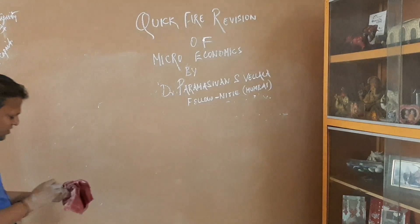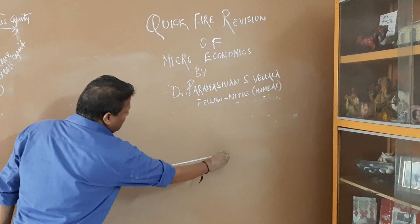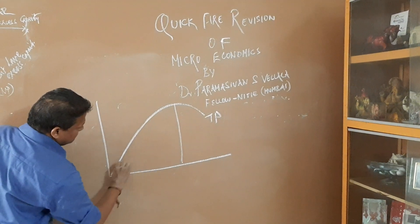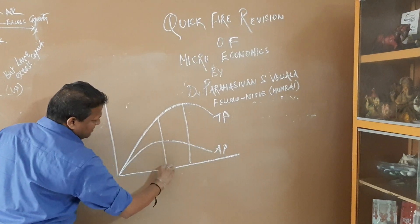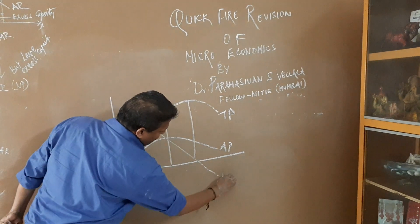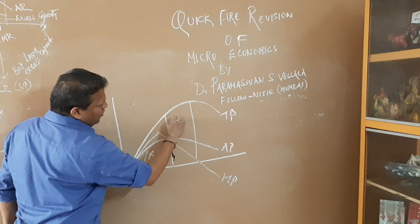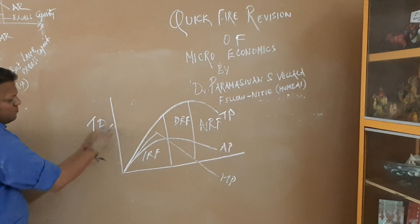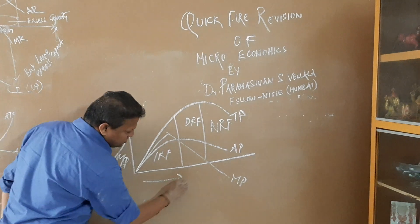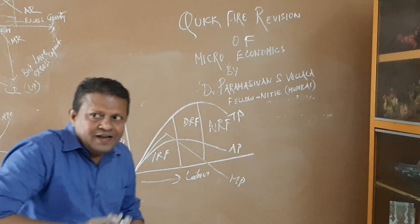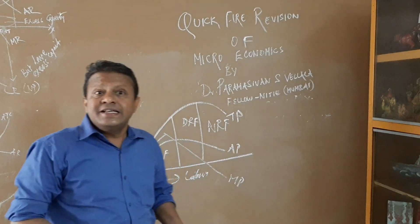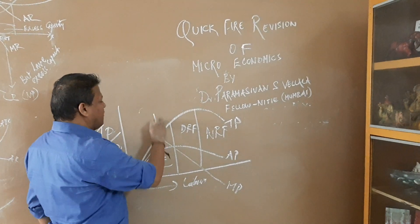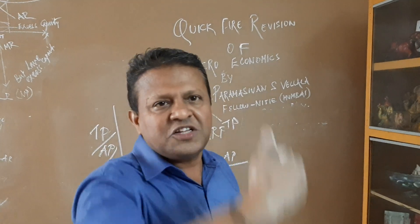The short-run production function is popularly used in the law of variable proportion. We explain total product, average product, and marginal product. The first stage is called the law of increasing return to factor, the second stage is the law of diminishing return to factor, and the third stage is the law of negative return to factor. When we add labor (the variable), total output initially increases at an increasing rate in the first stage. In the second stage, it increases but at a decreasing rate after the point of inflection. Thereafter, marginal output becomes negative and total output starts falling.